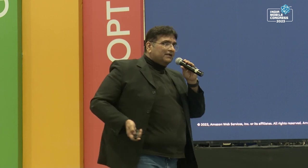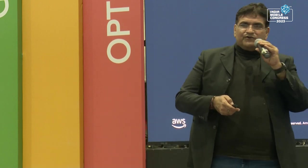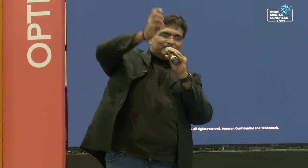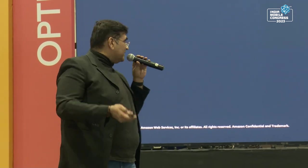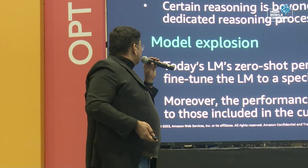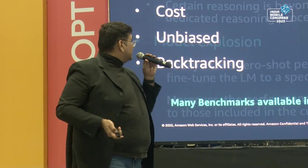Issues with pre-trained LLMs: we mentioned hallucination. Another is lack of current information - the model was trained one or two months ago, so if you ask about current events, it may have no idea. Or your own enterprise data is not visible to it - it's trained up to a particular date and that's all it knows. How do you handle that? And there's also lack of reasoning, plus model explosion happening now.